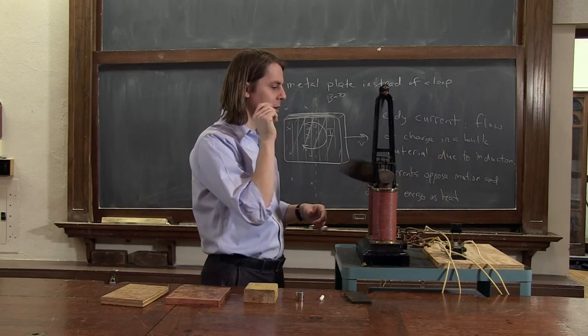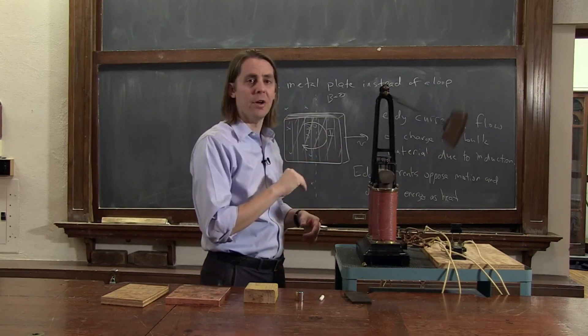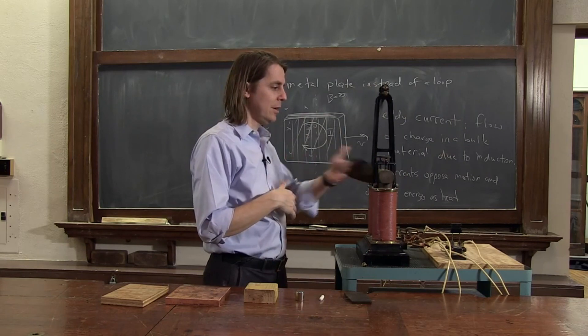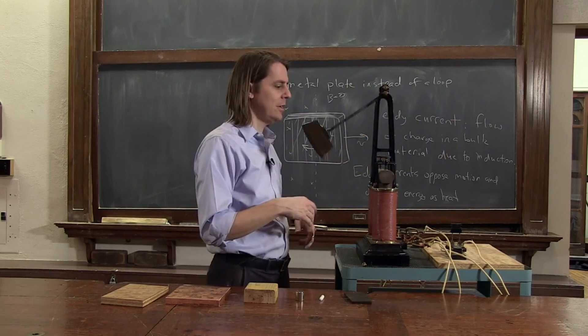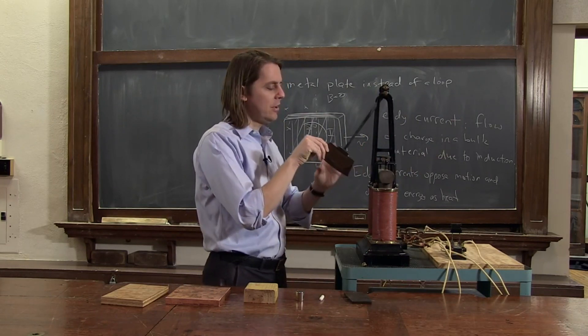So this plate will slide through there. The magnet is not on. You can see the plate has a lot of momentum, it'll sit there and swing for many, many cycles. When we turn on the magnet, suddenly it's going to run into a region of concentrated magnetic field.